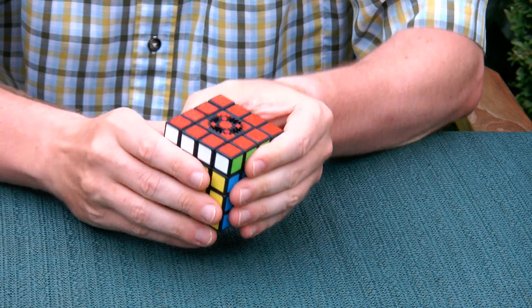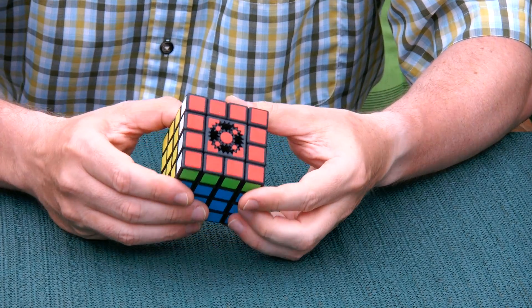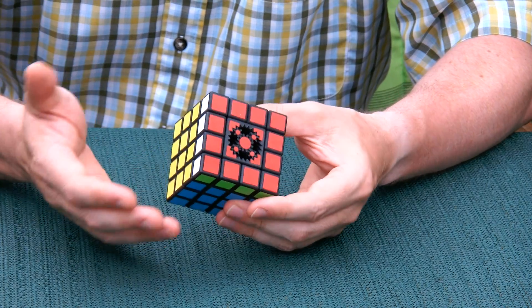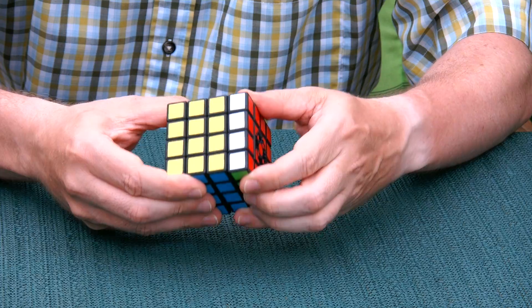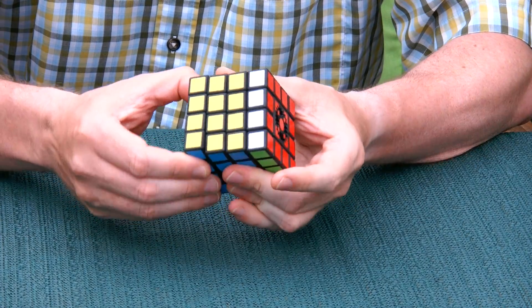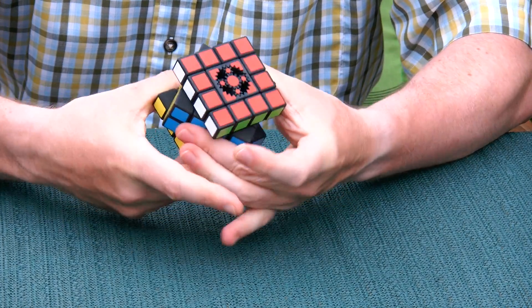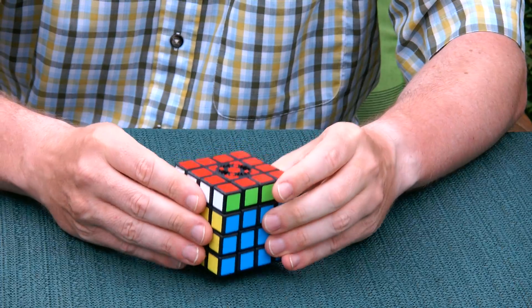The reason that this puzzle is called Ambigear Cube is because it's ambiguous gearing. Is it these layers that are gearing? Is it these layers or is it these layers? So that's about the name of this puzzle.